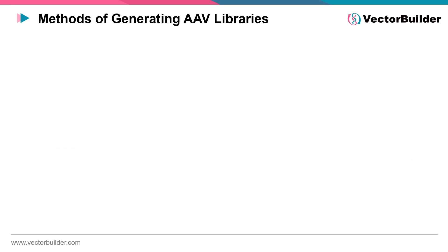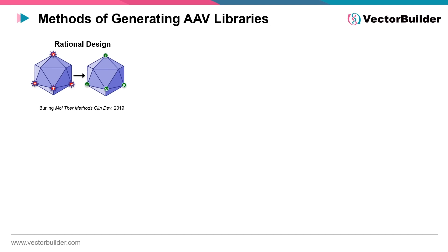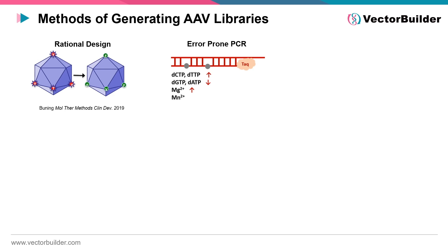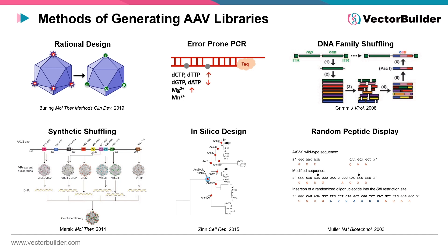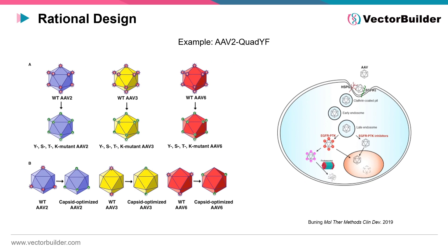Established methods for generating AAV capsid libraries encompass diverse approaches, including the rational design of AAV capsids, error-prone PCR targeting the AAV cap gene and its segments, DNA family shuffling, synthetic shuffling, in silico design, and random peptide display. Reviewing the relevant publications that have played a pivotal role in establishing and applying these methodologies can provide a more in-depth understanding of their principles and applications.